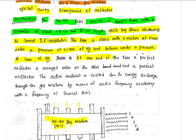At one end of the tube, a perfect reflector is arranged, while on the other end, a partial reflector is placed.